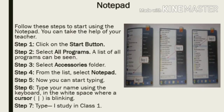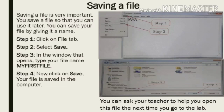Step 6: Type your name using the keyboard in the white space where the cursor is blinking. Step 7: Type 'I study in class 1'. After typing, you need to save the file. Saving a file is very important so that you can use it later. You can save a file by giving it a name by following the given steps.